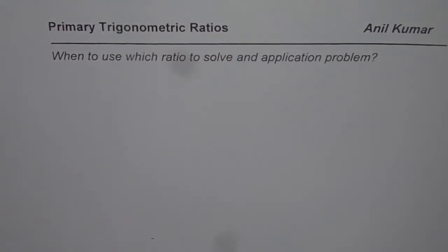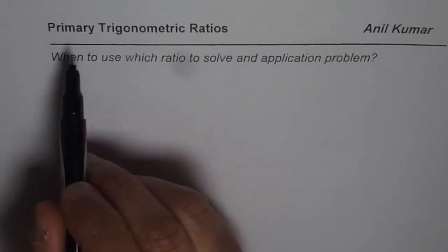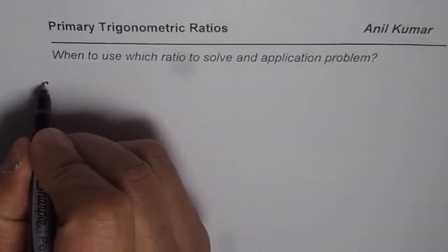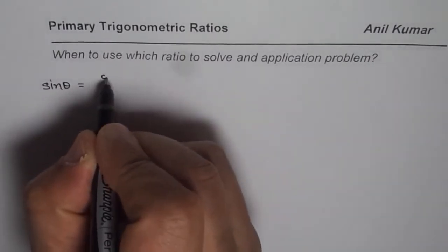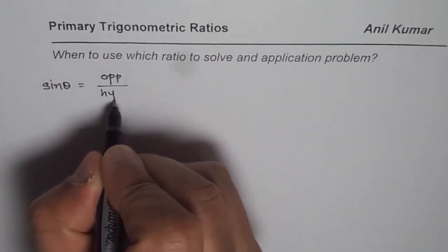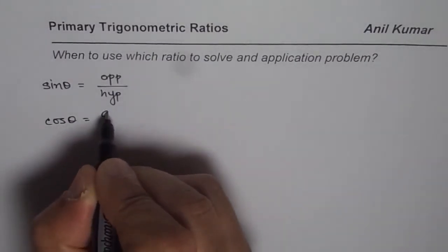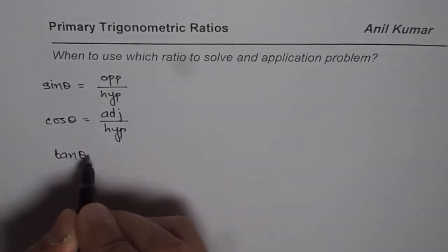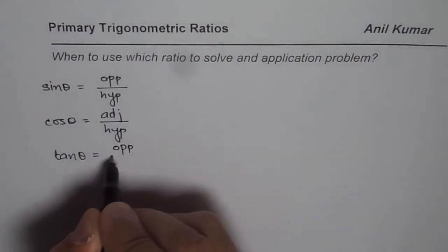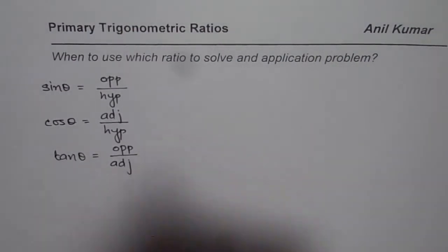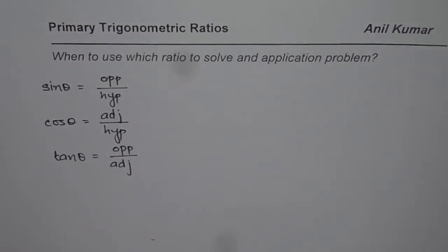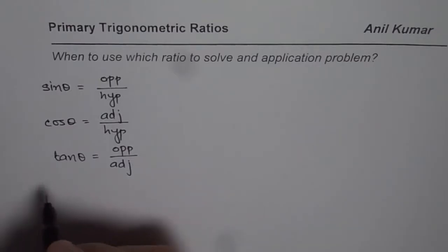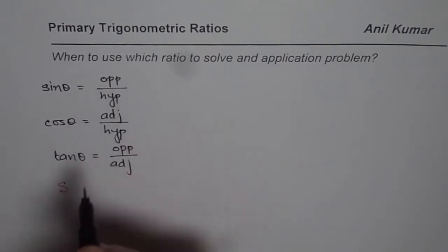I'm Adil Kumar and in this video we'll try to understand when to use which type of trigonometric ratio to solve an application problem. There are three primary trigonometric ratios: sine theta, which equals opposite over hypotenuse; cosine theta, which is adjacent side over hypotenuse; and tan theta, which is opposite over adjacent side. To remember this we normally use SOH-CAH-TOA — sine as opposite over hypotenuse.